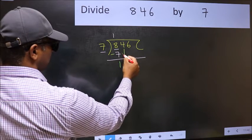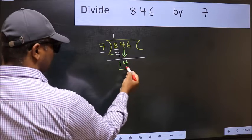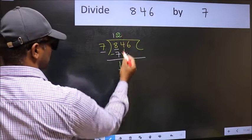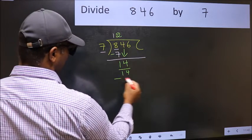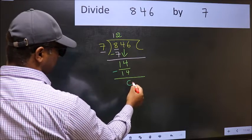After this, bring down the beside number. So 4 down. Now 14. When do we get 14 in 7 table? 7 twos, 14. Now you should subtract. 14 minus 14, 0.